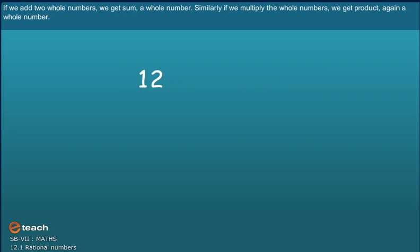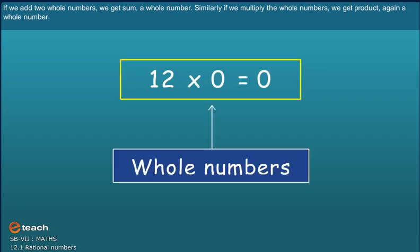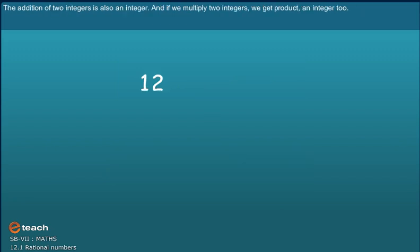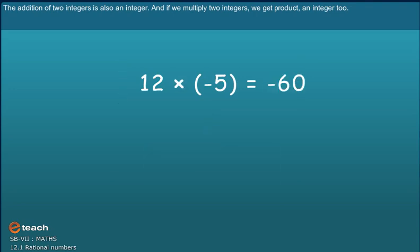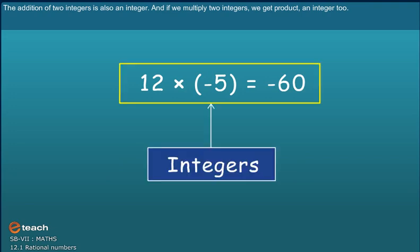If we add two Whole Numbers, we get sum of a Whole Number. Similarly, if we multiply the Whole Numbers, we get the product again a Whole Number. The addition of two Integers is also an Integer. And if we multiply two Integers, we get the product an Integer too.